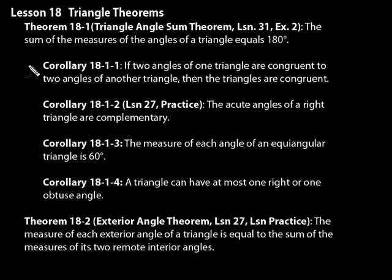So let's look at these corollaries now. These are statements that directly follow from a theorem, and so we see 18-1-1 there. If two angles of one triangle are congruent to two angles of another, then the triangles are congruent. So in other words, if we know two angles, we can figure out the third one.